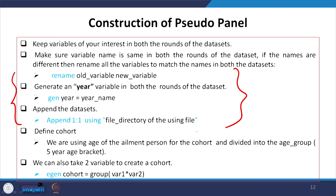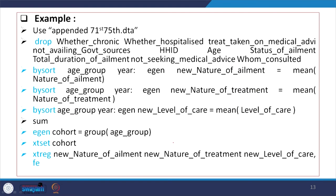Now we are guiding specifically on cohort generation. To define the cohort, we are using age of the ailment persons and dividing them into age groups with a five-year age bracket. You can also take two variables simultaneously as a cohort. In that case, the command is: egen cohort = group(variable1 variable2). The example dataset we are using is, as already mentioned, NSS 71st and 75th round. We will drop unnecessary variables, then sort by age and group year.